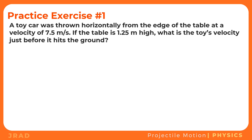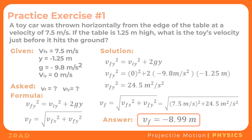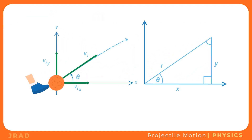Now it's your turn. A toy car was thrown horizontally from the edge of a table at a velocity of 7.5 meters per second. If the table is 1.25 meters high, what is the toy's velocity just before it hits the ground? You may pause the video for more time. Note that we take the negative root since the direction of motion is downward. The velocity of the toy car just before it hits the ground is 8.99 meters per second downward.